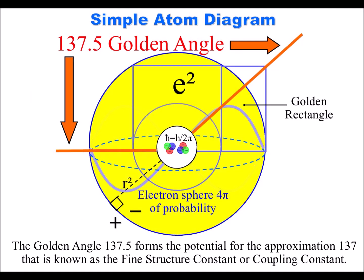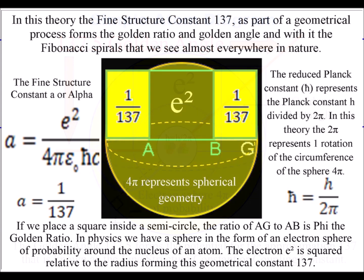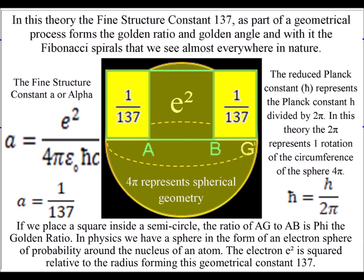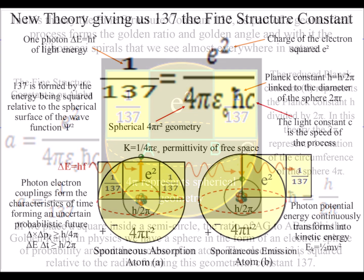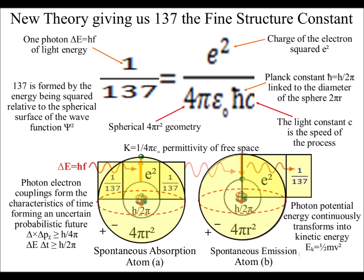When the energy levels drop it also forms another geometrical constant relative to the square of probability and the spherical surface. This is seen mathematically as the fine structure constant or coupling constant 137.